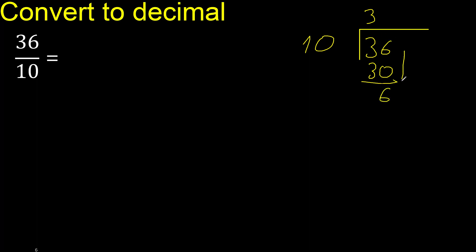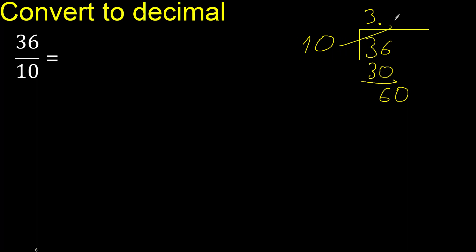There is no number that goes into 6, therefore complete. Always complete with 0 here — point only once. Then multiply by 6 is exact.